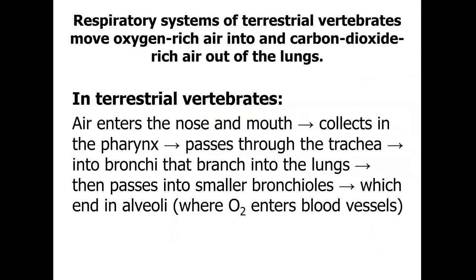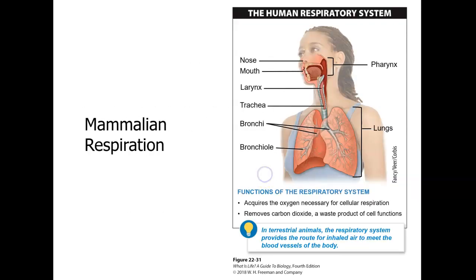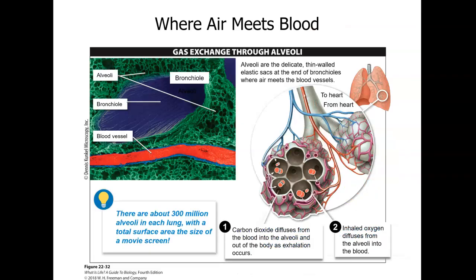In terrestrial vertebrates, air enters through the nose and mouth, collects in the pharynx (throat), passes through the trachea (airway) into the bronchi, then branches into bronchioles in the lungs, ending in alveoli where oxygen enters the blood vessels. The actual oxygen exchange takes place in the alveoli — small air-bubble-like structures where oxygen and carbon dioxide are exchanged at the capillary level.